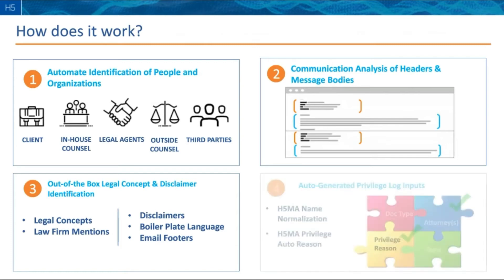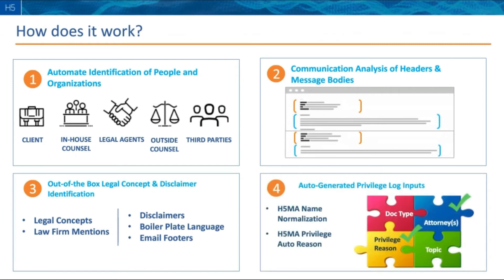Fourth — very pertinent to today's discussion — is generating privilege log inputs that are reliable and useful, as part of the recipe you generate with our new privilege log design studio module. We start with very strong name normalization, a key strength of the application that we've spent a lot of time developing and refining. Our name normalization and threading work hand in hand — these are our own algorithms, and our experience using them in the wild has refined them to the point where you can use them with very little cleanup.